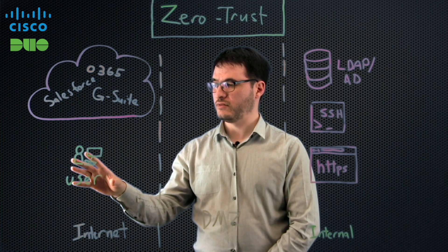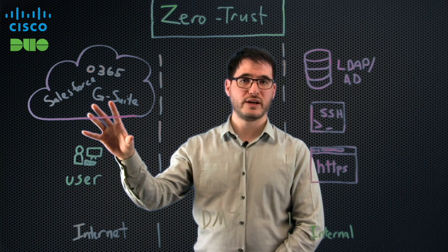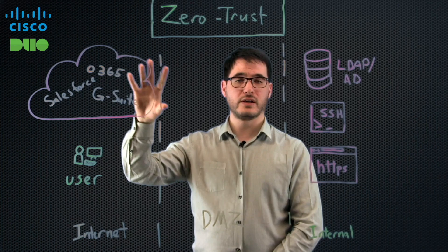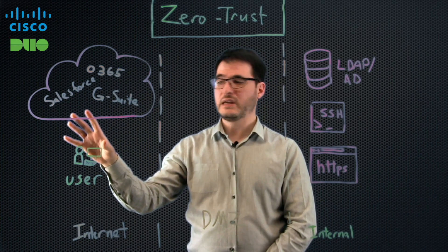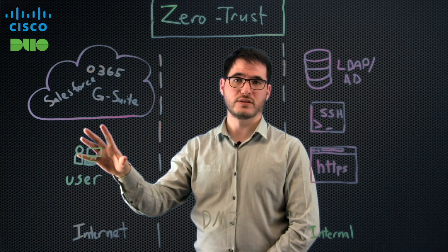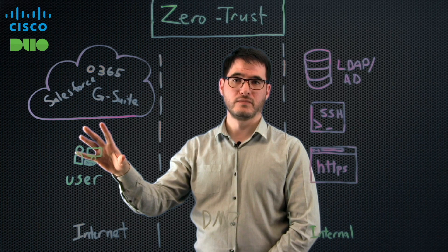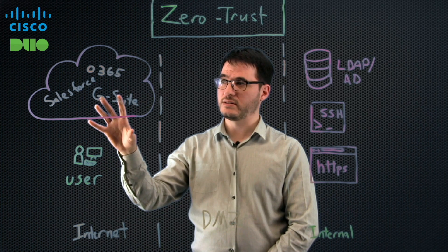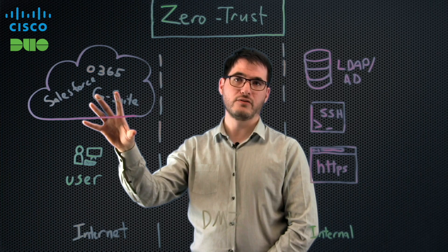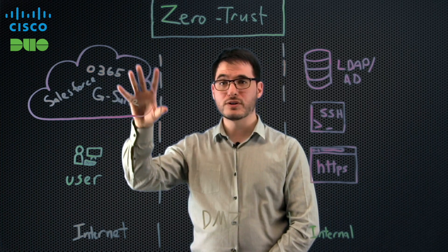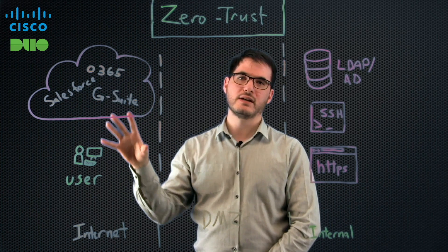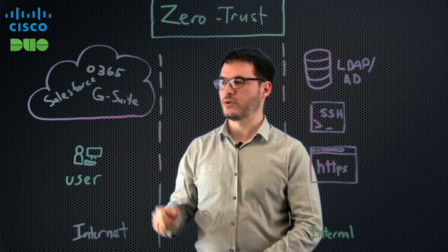That means that they're going to have different usernames and passwords, the requirements for the security of these applications could be completely different, and we don't get any visibility in that model as to what's going on there. And that's really a problem because as companies move towards cloud-first architectures, a lot more sensitive stuff is being stored up there. So we really need to get visibility into what's going on.